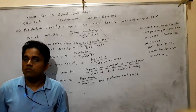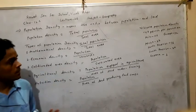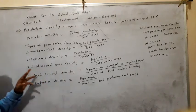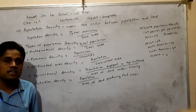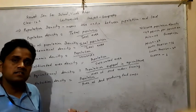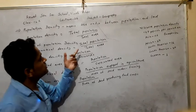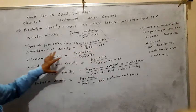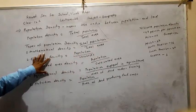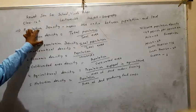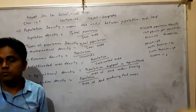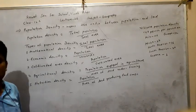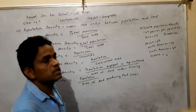Now the types of population density. First of all: mathematical density. Mathematical density is the ratio between total population and the total area. This ratio between total population and total area is called mathematical density. Mathematical density and population density share the same definition.